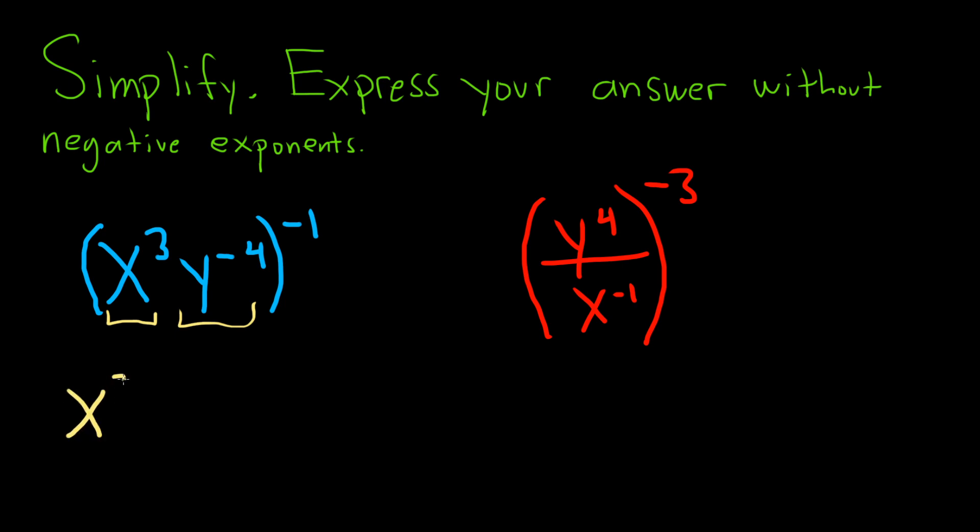So it would be x cubed and then this whole thing to the negative 1, and then y to the negative 4 and then this whole thing to the negative 1. So whenever you have multiplication like this and it's being raised to a power, you just raise each individual piece. Now it has to be multiplication, right? It won't work with addition. So only when it's times.